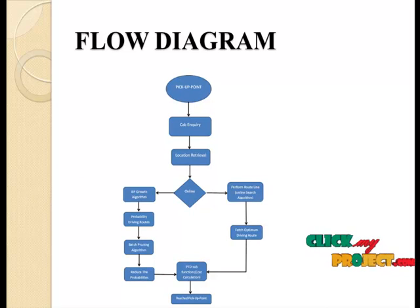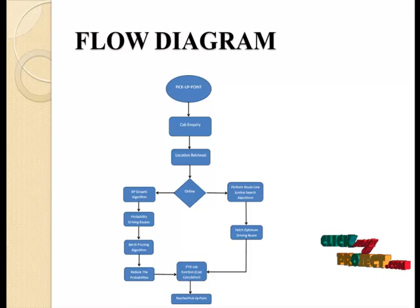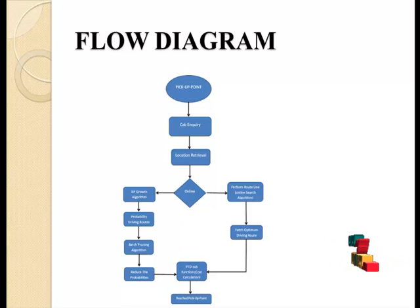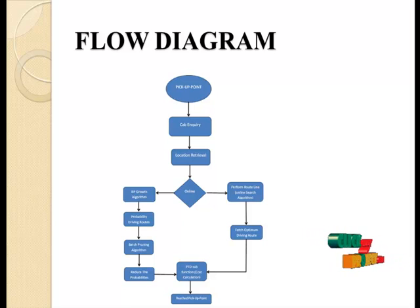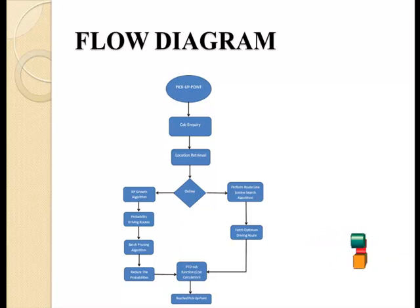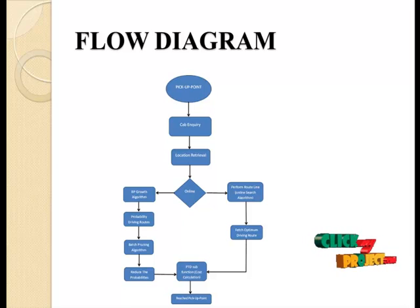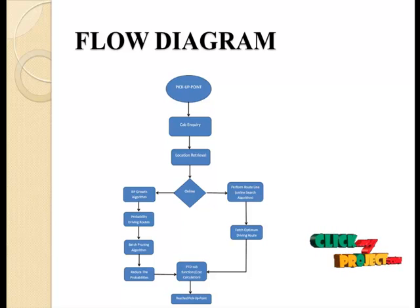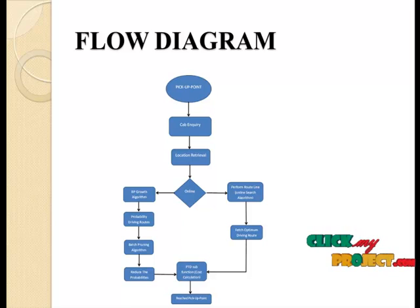This is our data flow diagram. In this, we identify what pick-up points are available to reach the source, and also what pick-up points are available to reach the source from the destination. In cab enquiry, we enquire about how many traced routes are optimal or have the least travel time. Location to travel is the source and destination given by the user. The cab center must identify all locations or paths specified between the source and destination.